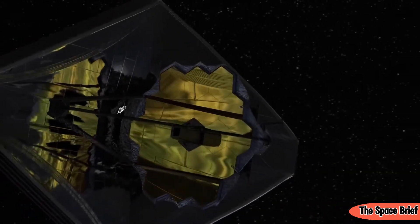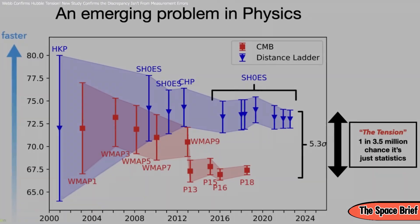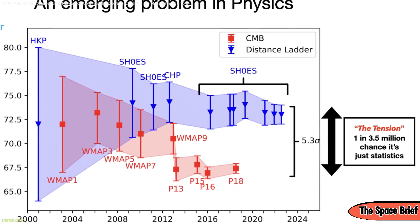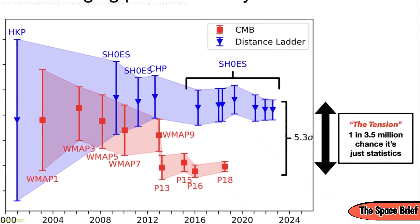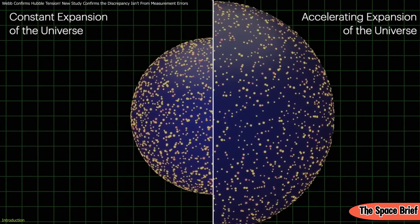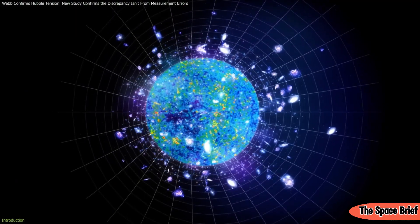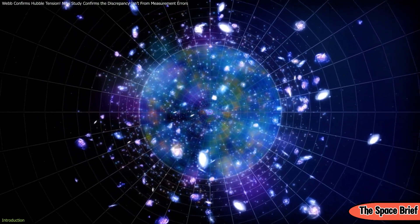The James Webb Space Telescope has confirmed the Hubble Tension, a baffling discrepancy in how we measure the universe's expansion rate. This means the universe is expanding faster than we thought, and our current models of cosmology might be missing a crucial piece of the puzzle.